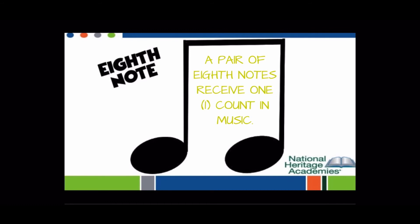The last pair of notes are still eighth notes, but these are two eighth notes. The way that you connect the two eighth notes is with a line at the top connecting them together. We call these a pair — just like when you wear shoes, if you have two shoes, you call them a pair. A pair of eighth notes receives one full count in music.